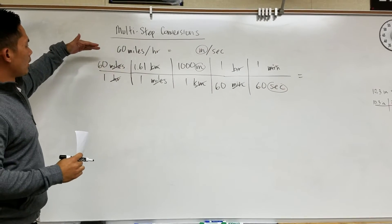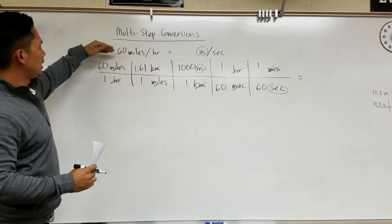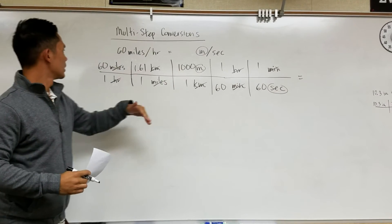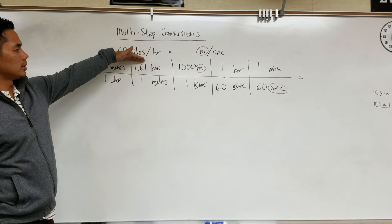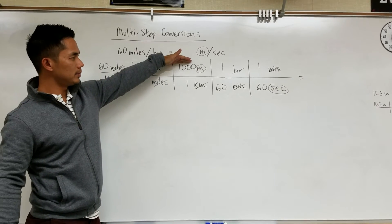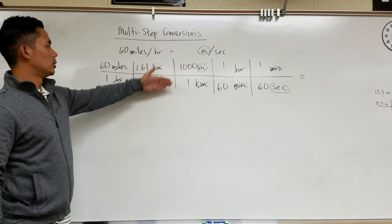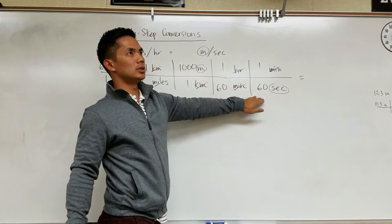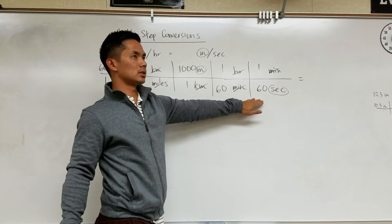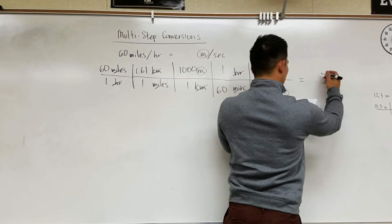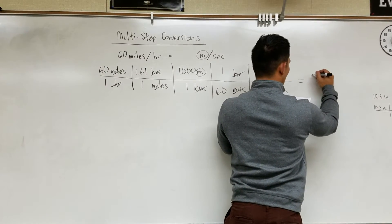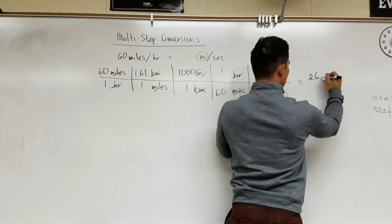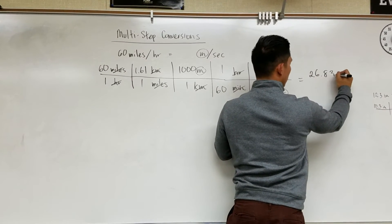So you're going to multiply all of the numbers on top. 60 times 1.61 times 1,000. And then you'll divide by 60 times 60 which is 3,600. So your answer will be 26.8333.